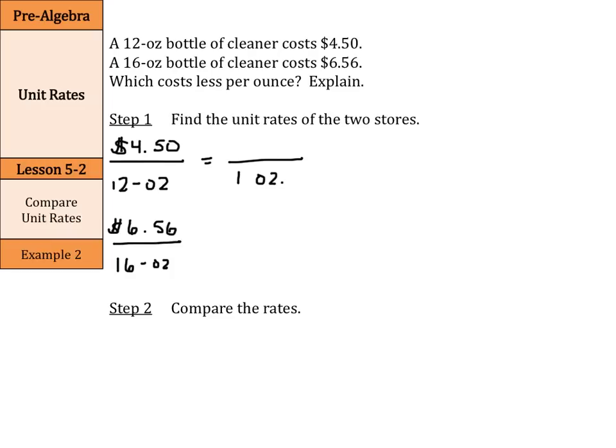Now, the 12-ounce bottle, if we divide by 12 on top and bottom, $4.50 divided by 12 is $0.38 for one ounce. If we get the 16-ounce bottle, we can divide by 16 on top and bottom, and $6.56 divided by 16 is $0.41 per ounce. So, which is the cheaper price per one ounce is the first bottle.